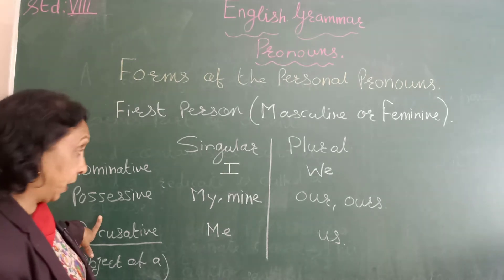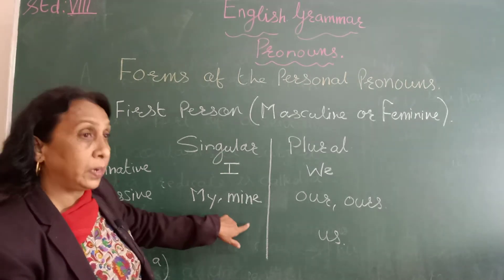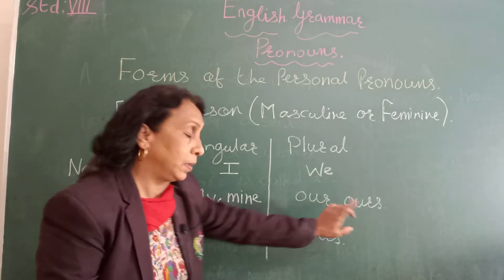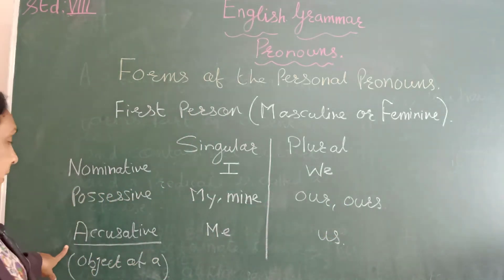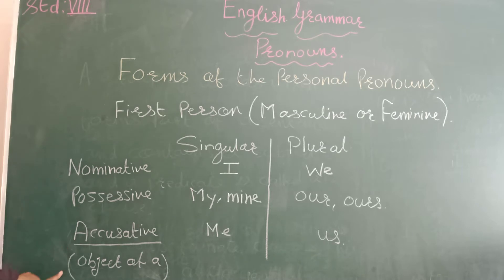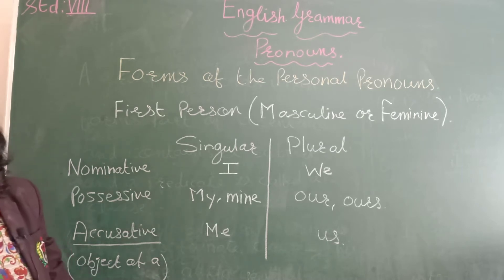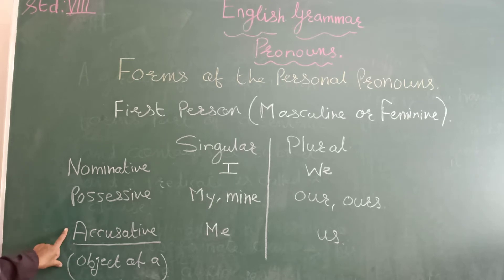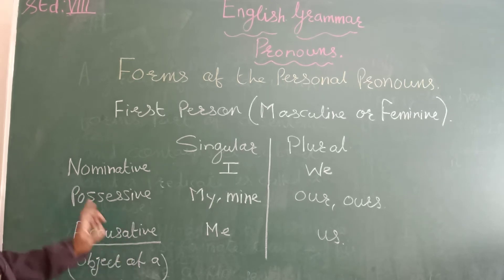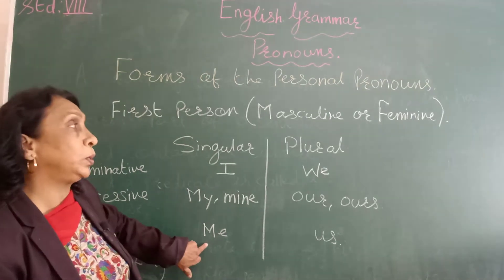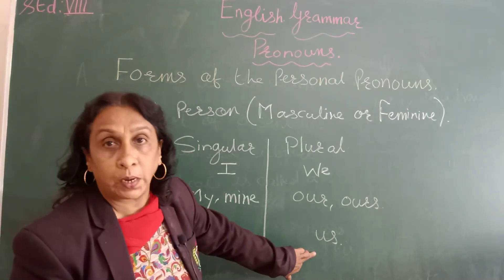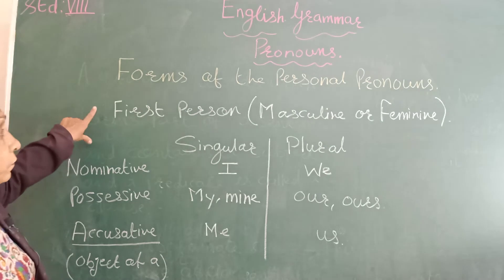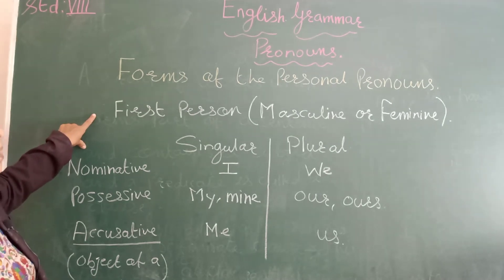Possessive means ownership. In the singular type we use 'my' and 'mine', and when it is plural we use 'our' or 'ours'. Then the accusative case — accusative means it is the object of a verb. A verb is an action word. In the accusative case, when it is singular we use 'me', and when it is plural we use 'us'.